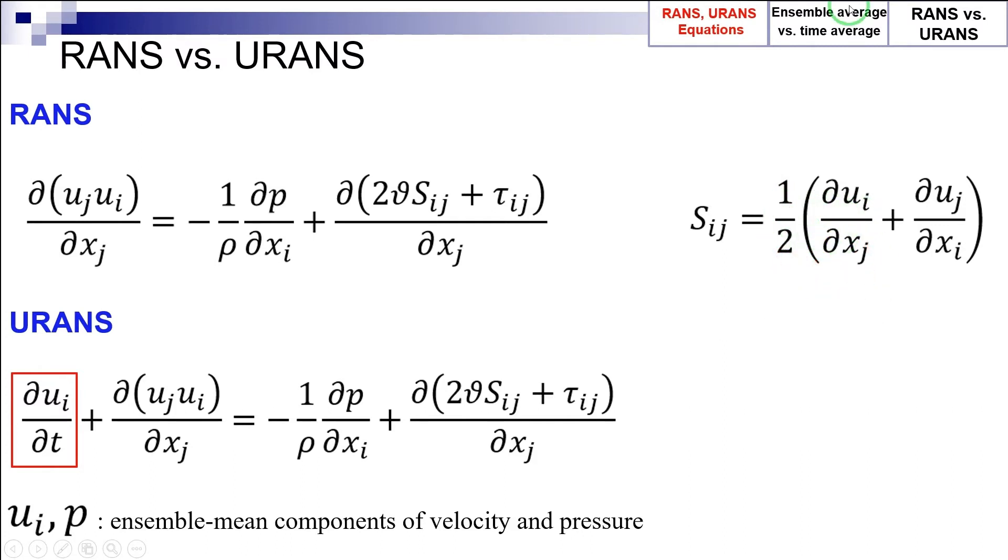Tauij, as we can see here in the RANS and URANS equations, is the turbulent tensor or Reynolds stress tensor, and is written like this, the mean product of the fluctuating velocity components.